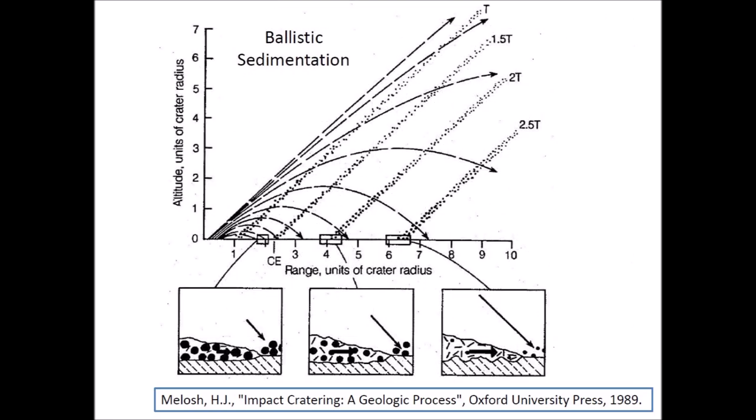The excavation stage begins immediately after the contact and compression stage. A hemispherical shockwave propagates through the target, creating a circular crater. Material is ejected in the form of an expanding conical ejecta curtain. The innermost ejecta are launched first and travel fastest in parabolic trajectories. Ejecta originating further from the center are launched later and move more slowly, falling nearer the rim. This image illustrates how large, heavier material falls closer to the impact point and small, lighter material falls further away. Later we will see that the Carolina Bays differ from this size distribution, which influences the calculation of the energy of sedimentation.